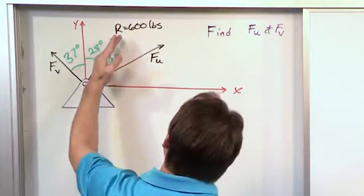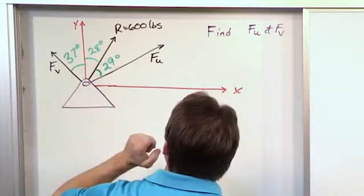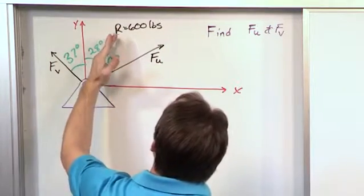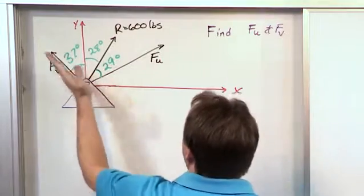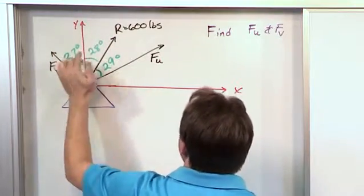So we know, for instance, the angle between the resultant and FU is 29. We know the angle between the resultant and the Y-axis is 28, and we know the angle between FV and the Y-axis is 37.